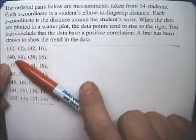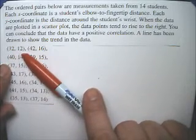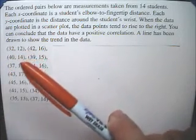And then these are the points. The first number represents the length of the lower arm, and the second number is the circumference of the wrist.